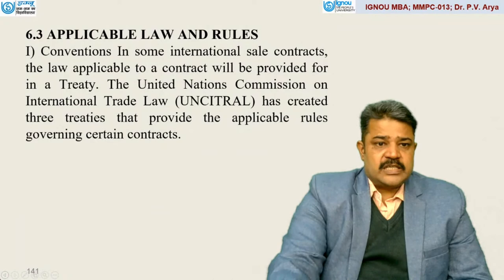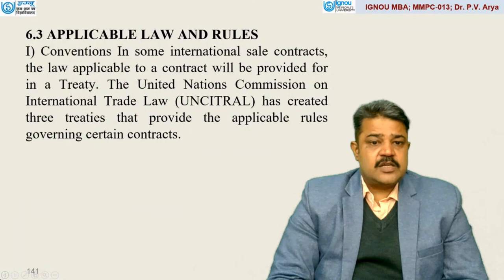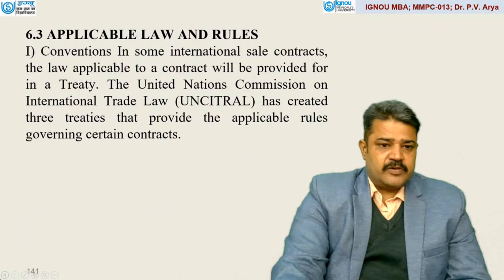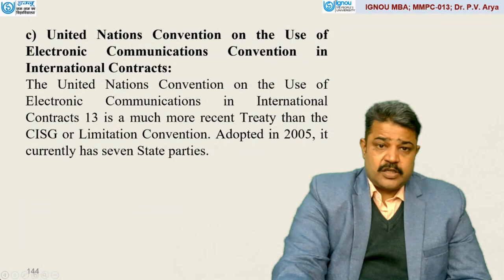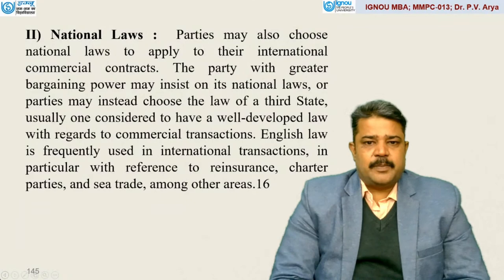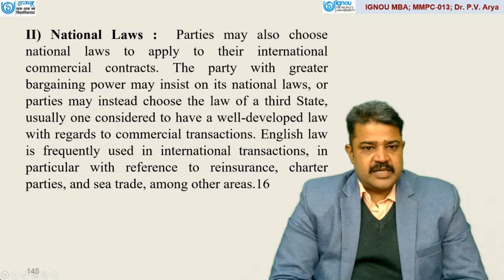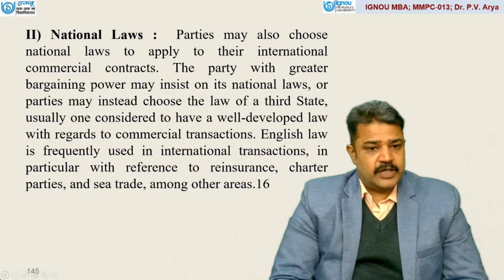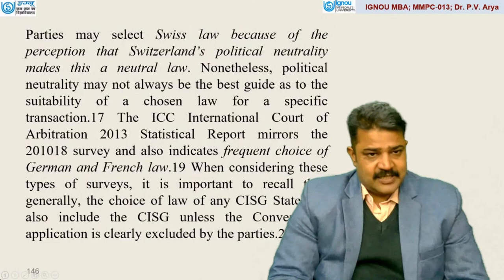As far as applicable law and rules are concerned, the law applicable to a contract will be provided for in a treaty. The United Nations Commission on International Trade Law, UNCITRAL, has created three treaties providing the applicable rules governing certain contracts — CISG, the Convention on Limitation Period in the International Sales of Goods, and the United Nations Convention on the Use of Electronic Communication. Parties may also choose national laws to apply to their international commercial contracts. The party with greater bargaining power may insist on its national laws, or parties may choose the law of a third state — usually one considered to have well-developed commercial law. English law is frequently used in international transactions, particularly for reinsurance, charter parties, and sea trade.